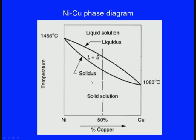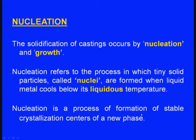The liquidus temperature can be seen in the phase diagram of nickel and copper. There are two lines: everything above the liquidus line is liquid, and everything below the solidus line is solid. In between is the liquid plus solid zone, that is the mushy zone. Nucleation is a process of formation of stable crystallization centers of a new phase — it takes place between the liquidus line and solidus line.